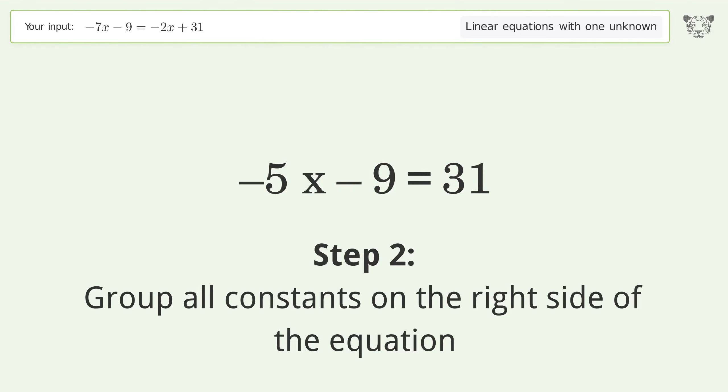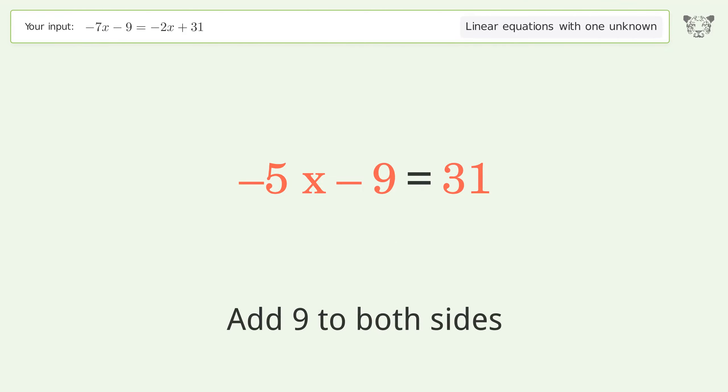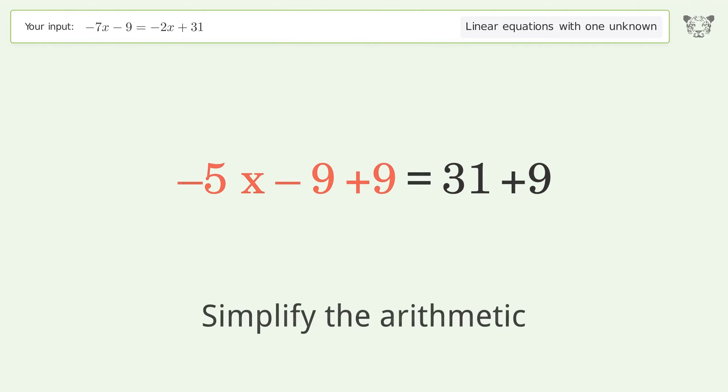Group all constants on the right side of the equation. Add 9 to both sides. Simplify the arithmetic.